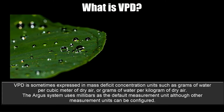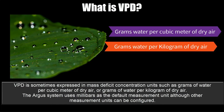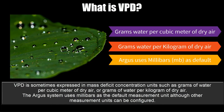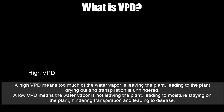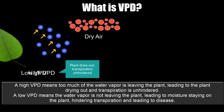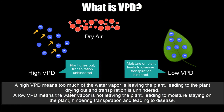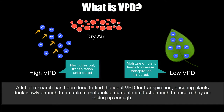VPD is sometimes expressed in mass deficit concentration units such as grams of water per cubic meter of dry air or grams of water per kilogram of dry air. The Argus system uses millibars as the default measurement unit, although other measurement units can be configured. High VPD means too much water vapor is leaving the plant, leading to the plant drying out and transpiration being unhindered. A low VPD means water vapor is not leaving the plant, leading to moisture staying on the plant, hindering transpiration and leading to disease. A lot of research is done to find the ideal VPD for transpiration, ensuring plants drink slowly enough to metabolize nutrients but fast enough to ensure they are taking up enough.